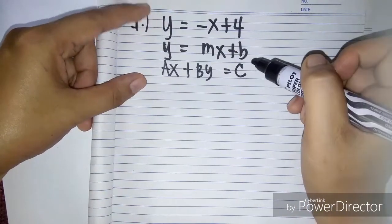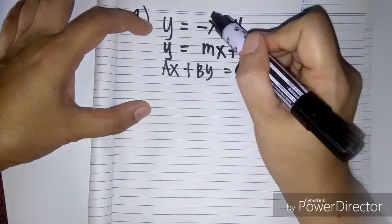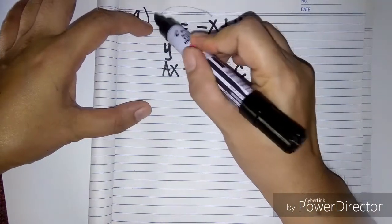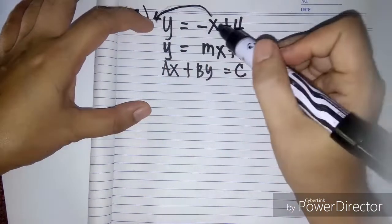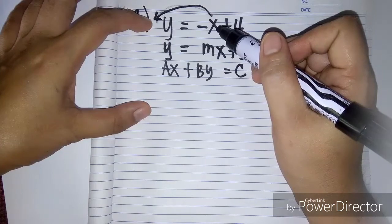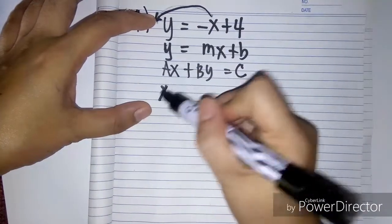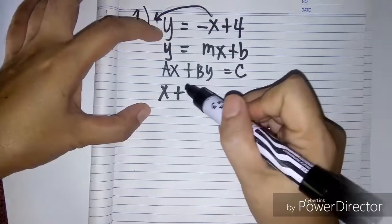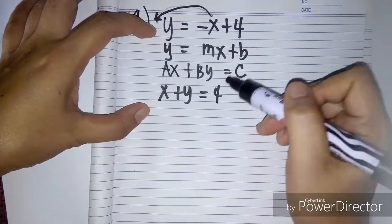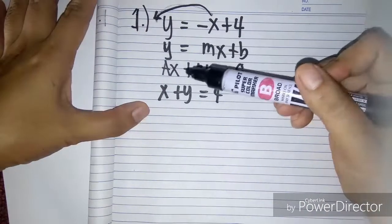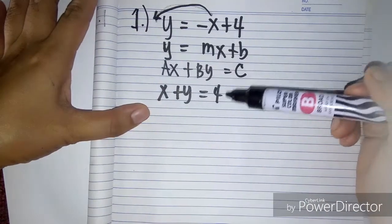In order to rewrite this in standard form, we need to transpose negative x to the other side. So this is negative x, then we're going to change the sign, make it positive: plus y equals 4. So now it is in standard form — we have the ax, the by, and the c.